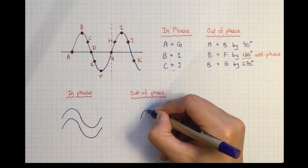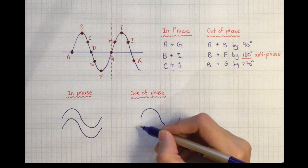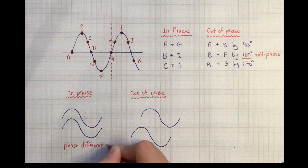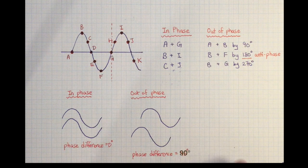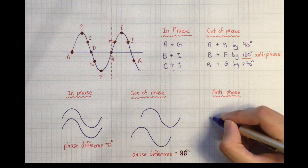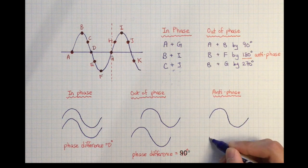These two waves are in phase because they are both beginning at 0 degrees. These two waves are 90 degrees out of phase. These two waves are 180 degrees out of phase, and therefore they are anti-phase.